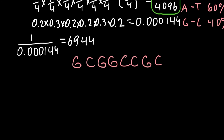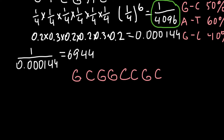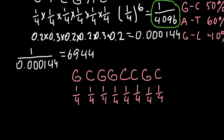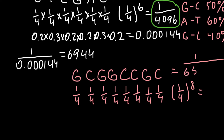Once again, if we have equal distribution of bases, the calculation is one quarter for each of the eight positions — that is one quarter raised to the power of 8. The answer is that we can find this sequence once per every 65,536 bases on a given DNA fragment.